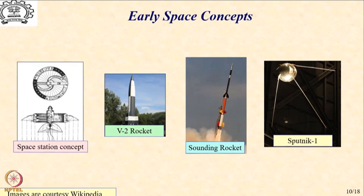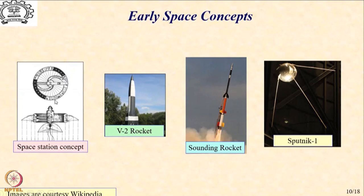I would like to show you a couple of early images of the space objects that were created. In the middle you have the V2 rockets and the sounding rocket, and then on the extreme right you have the Sputnik. Interestingly, around the same time there was also a realization of much bigger and much more sophisticated objects such as space stations, which were only in the conceptual stage at that time, but people had started thinking along those lines.